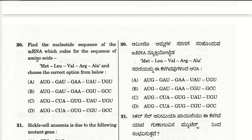The thirtieth question: find the nucleotide sequence of mRNA coding for methionine, leucine, valine, arginine, and alanine. Methionine is AUG, leucine is CUA, valine is GUG, arginine is CGU, and alanine is GCC. So T (the fourth choice) is the right answer. Remember: AUG for methionine, GUG for valine, and GCC for alanine.